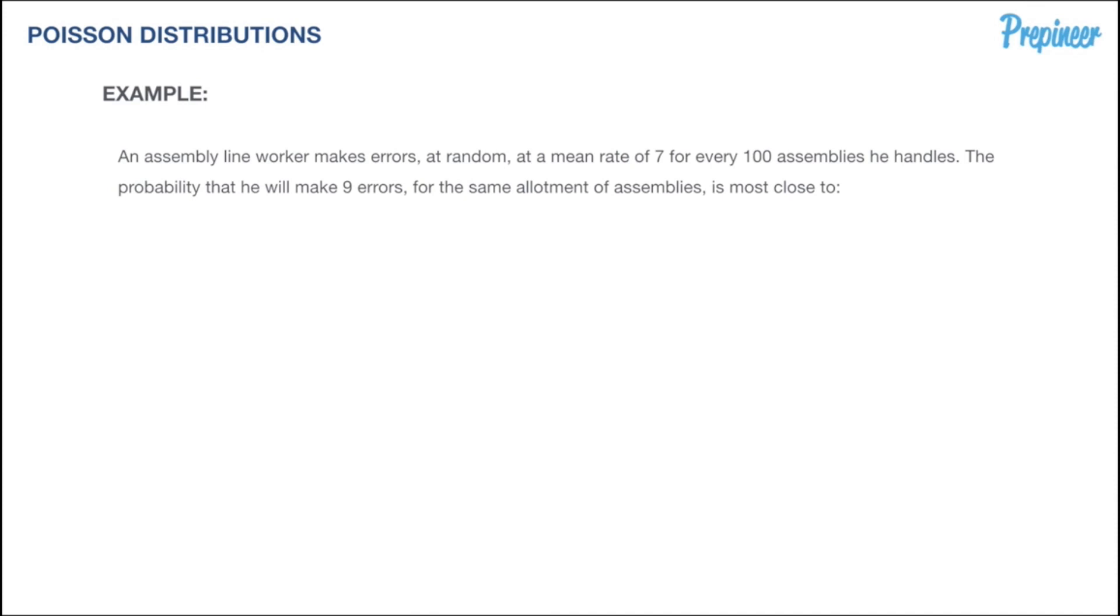Let's flip the page and work that same example. Now we'll give him a little leeway: what's the probability that he will make 9 errors? Same problem, but we're assessing the chances he'll make a ton of errors—9 in this case, above the mean rate. Again, the errors are at random.